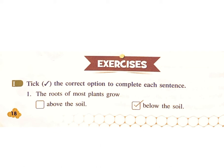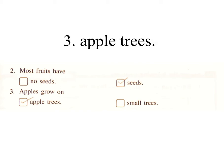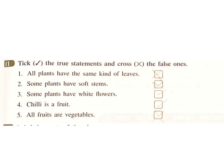Exercises. One: Choose the correct option. The roots of most plants grow — above the soil or below the soil? Answer: Below the soil. Two: Most fruits have — seeds or no seeds? Answer: Seeds. Three: Apples grow on — apple trees or small trees? Answer: Apple trees.